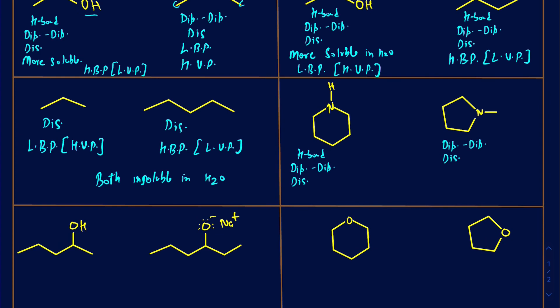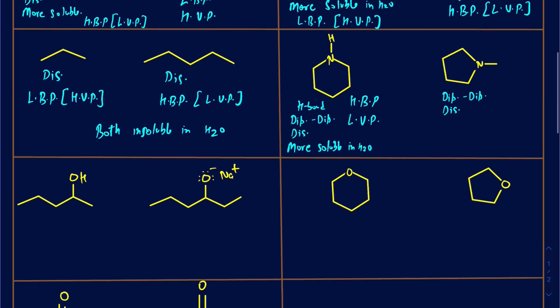Hydrogen bond presence means it's more soluble in water. The relative size of the molecule is about the same, even though one is a six-membered ring and the other is five-membered, but the number of carbons is actually the same. Since you're making stronger intermolecular forces on the left side, this would have a high boiling point and that reflects having low vapor pressure. So the one on the right side should have a relatively low boiling point and high vapor pressure.